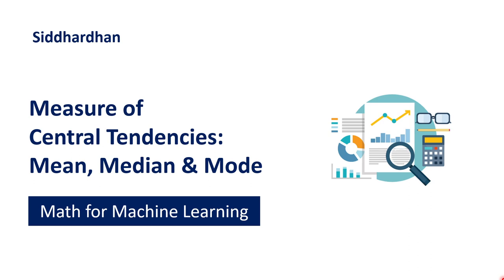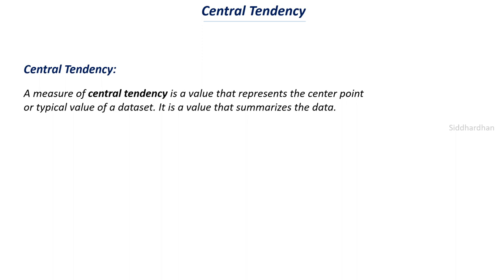The next topic is measures of central tendencies, which includes three measures: mean, median, and mode. Central tendency is a value that represents the center point or typical value of a dataset — it is a value that summarizes the data. Think of it as one value representing your entire data. Consider a dataset with 20 values — if you want to represent all 20 values with just one value, you can use measures of central tendency.